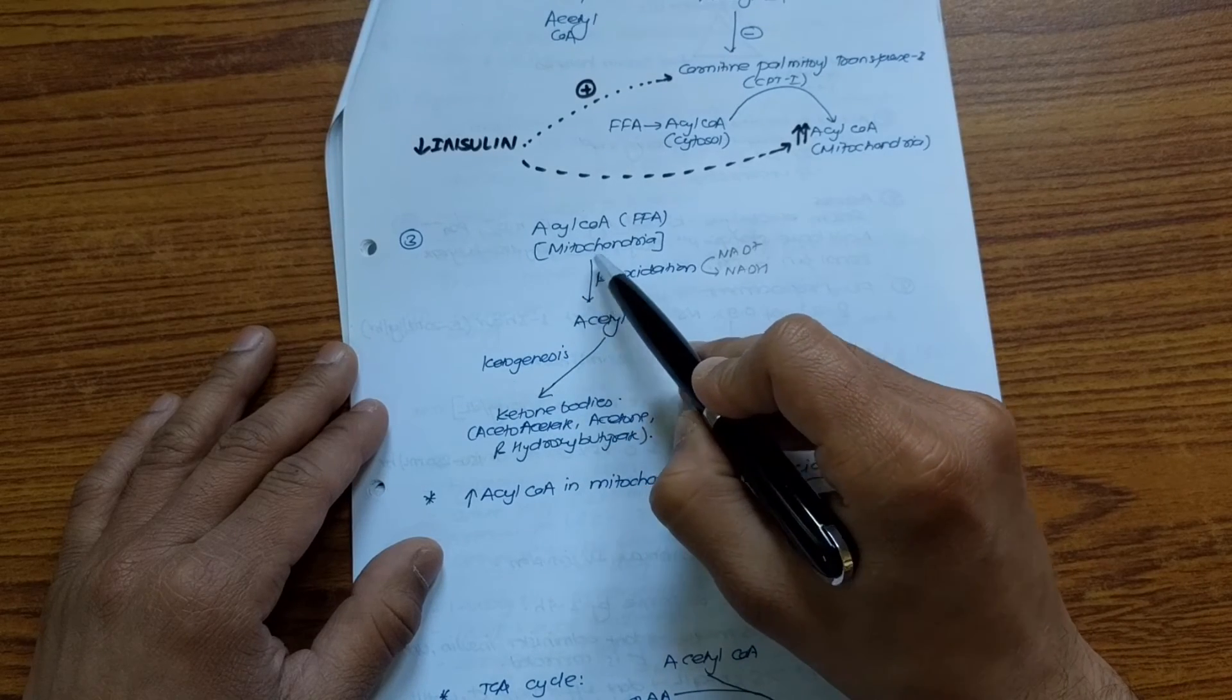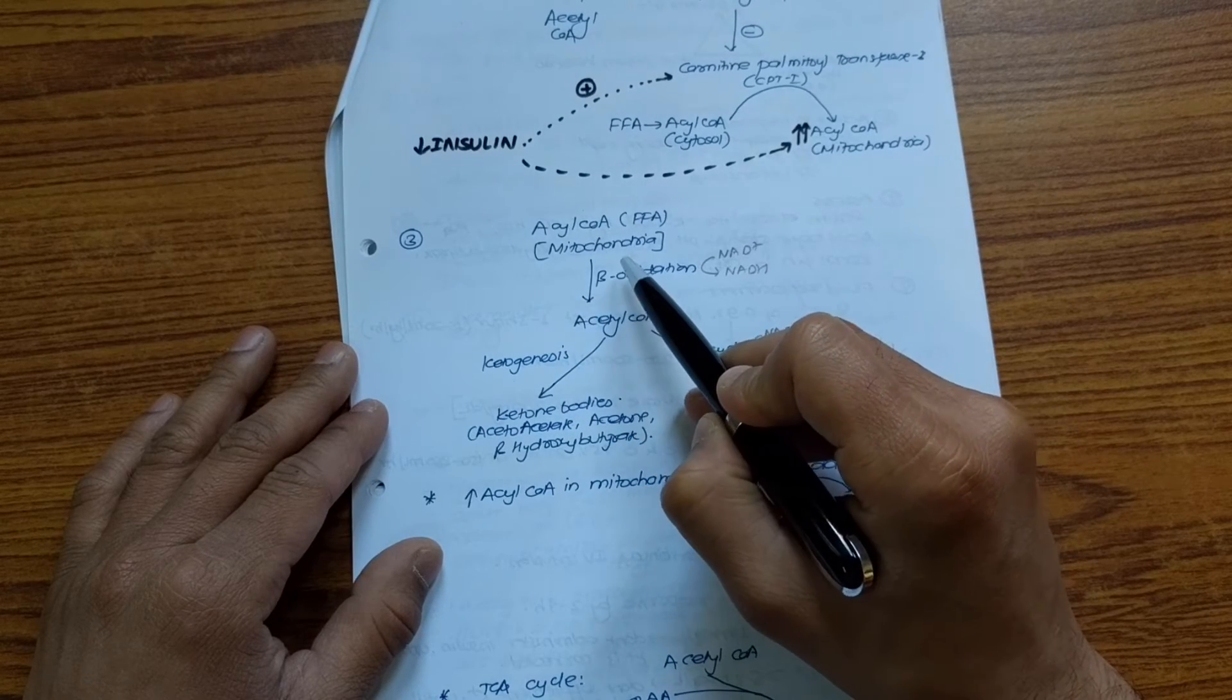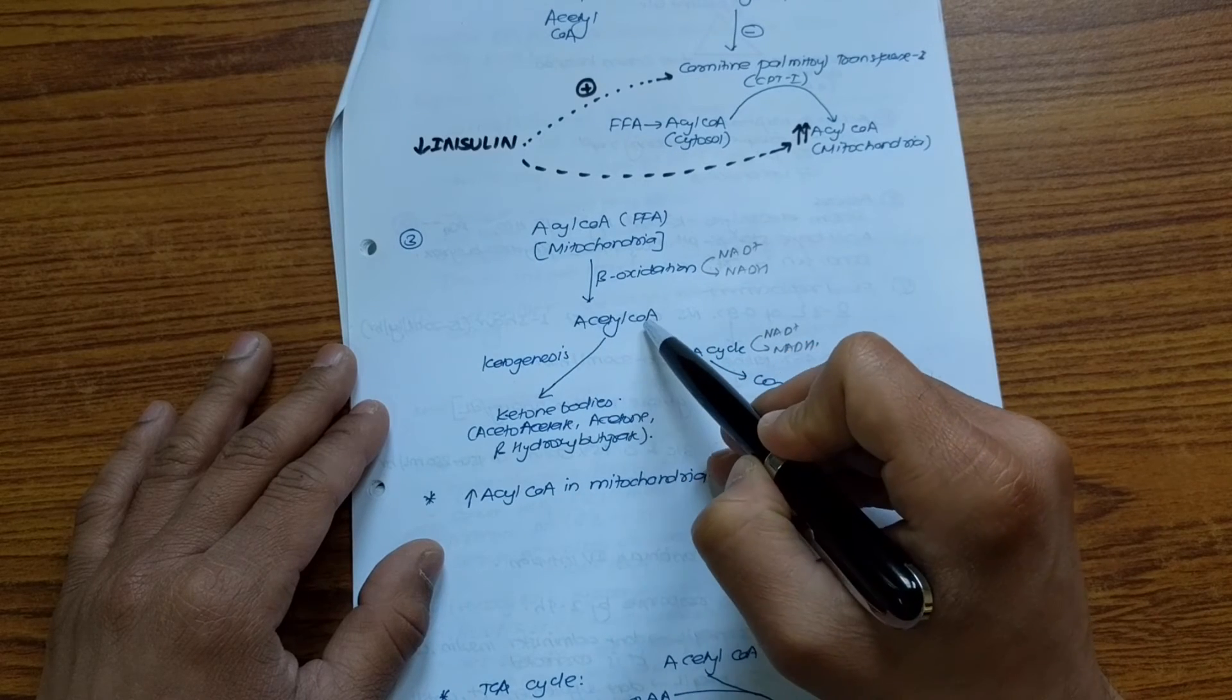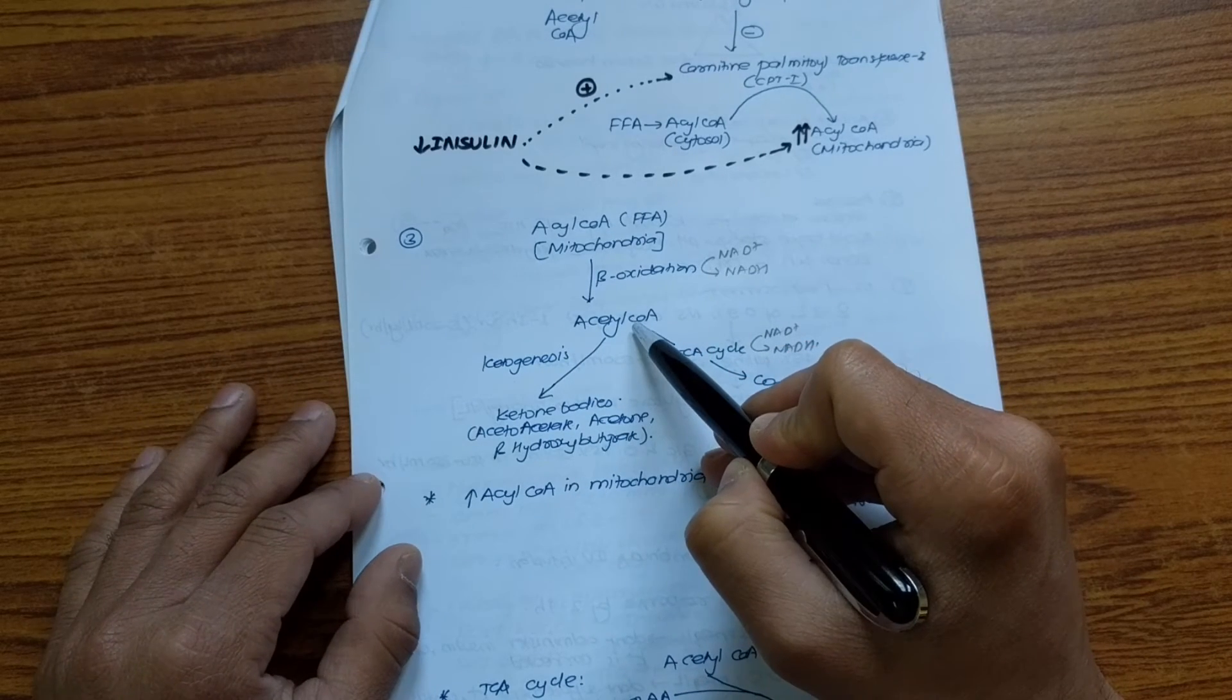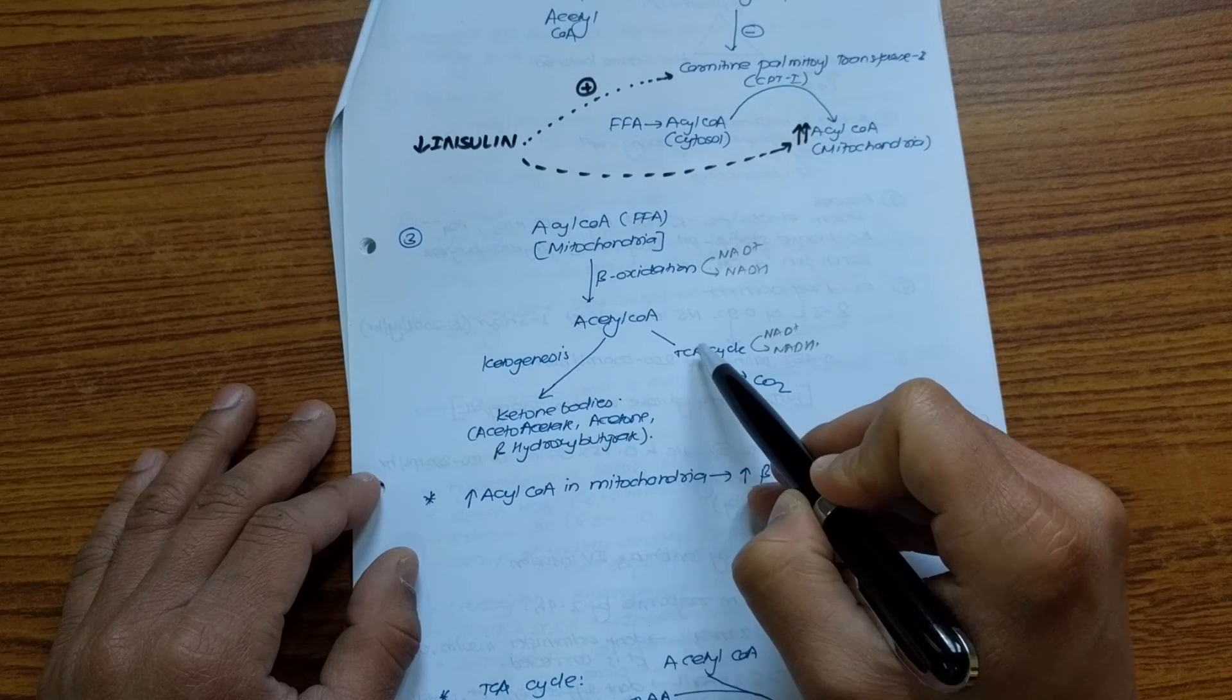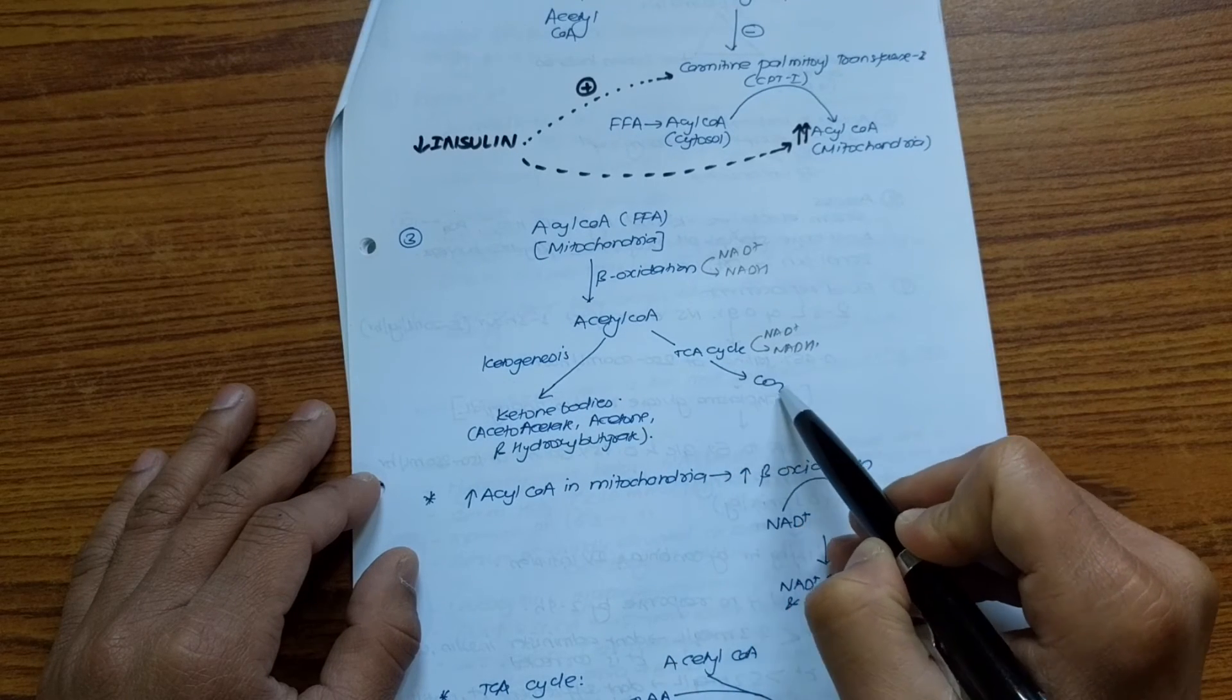Now since this acetyl-CoA has entered into the mitochondria, inside the mitochondria beta-oxidation takes place and this will form the acetyl-CoA. This acetyl-CoA can either enter the ketogenesis and form ketone bodies, or can enter in the TCA cycle to form energy and release carbon dioxide.